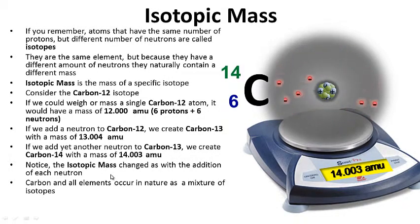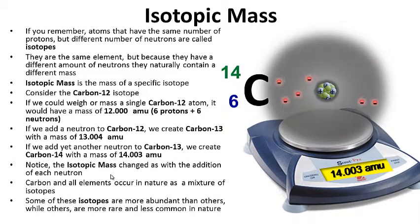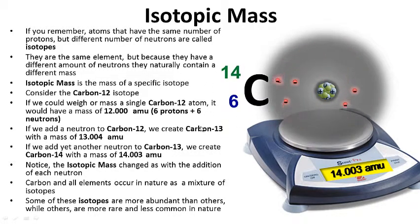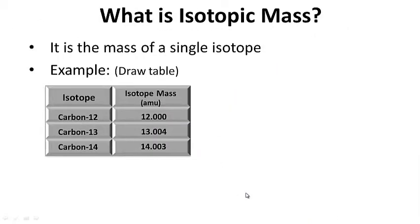Carbon, like all elements, occurs in nature as a mixture of isotopes. Some isotopes are more abundant than others, while others are more rare. Carbon-14 is very rare, while carbon-12 is very common. For your notes: what is isotopic mass? Write the question on the left-hand side and the answer on the right-hand side, including the example. Pause and work on this.